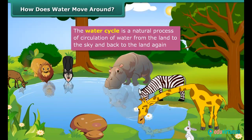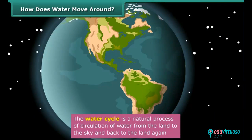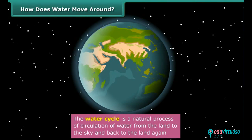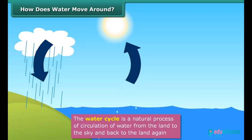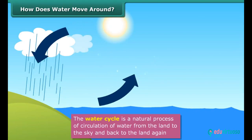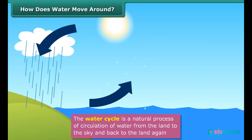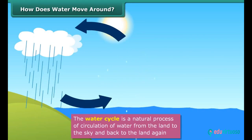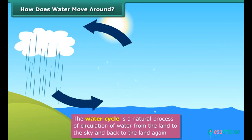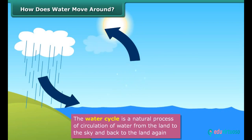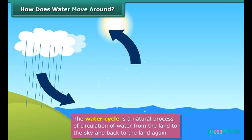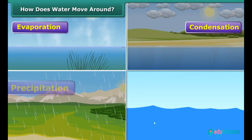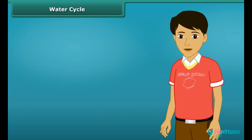Have you wondered how, despite consumption of water by living things on earth for hundreds of years, the balance of water on the planet has been maintained? It is the water cycle which makes this possible. The repeated changing of water in nature from liquid to gaseous form and then back to liquid form is called the water cycle. There are four main steps: evaporation, condensation, precipitation and collection.